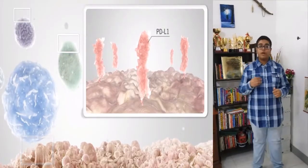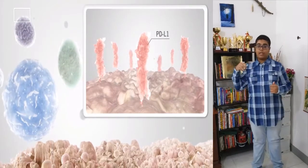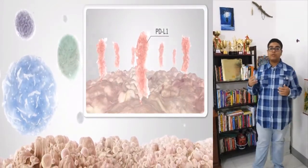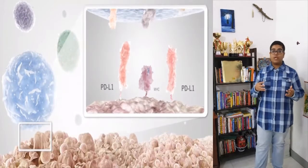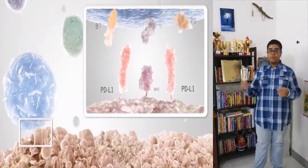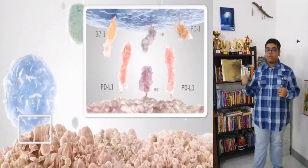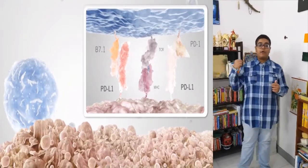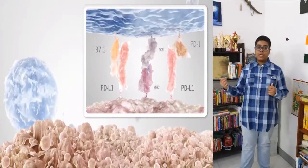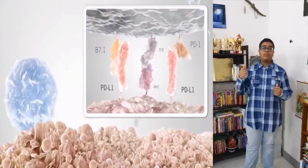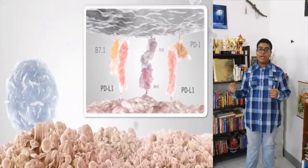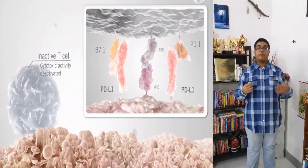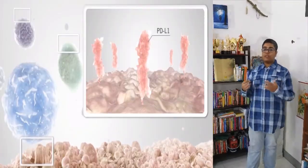The PD1 receptor works by deactivating an already activated T cell when it binds to a molecule called PDL1. PDL1 also binds to CD80, thus preventing the activation of CD28. Cancer cells exploit this pathway by overexpressing PDL1 on their surfaces, thus shutting down activated T cells. In other words, the T cells recognize but cannot kill the cancer cells.